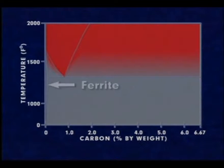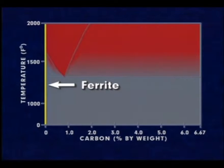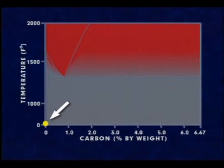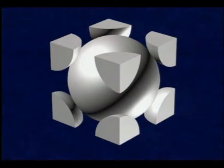The left-hand side of this diagram is ferrite. Ferrite is iron containing an extremely minute amount of carbon. At room temperature, ferrite is magnetic, relatively soft, and has a body-centered cubic crystal structure.